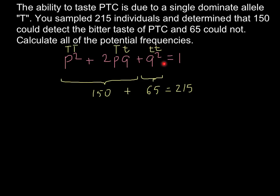So now we have to find the frequency of the non-tasters. That is q squared or small t, small t. And in order to do this, we have to divide 65, the frequency of the non-tasters, by the number of all people who take a part in this experiment. So we have to divide by 215. And the frequency of the homozygous recessive would be 0.3. So we can put this number here, frequency would be 0.3.